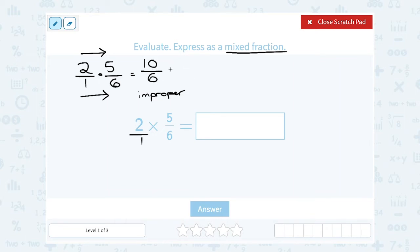6 only goes into 10 one whole time. 6 times 1 is 6. So if I subtract that, 10 minus 6 would leave 4 left over out of my 6. So as a mixed number, I can say 1 and 4/6.